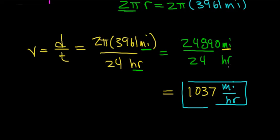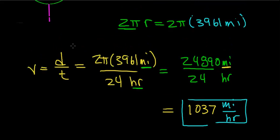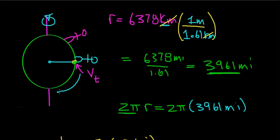This is the tangential velocity of a person standing on the Earth's equator. To reinforce one concept: as you get closer to the poles of the Earth, your tangential velocity decreases.